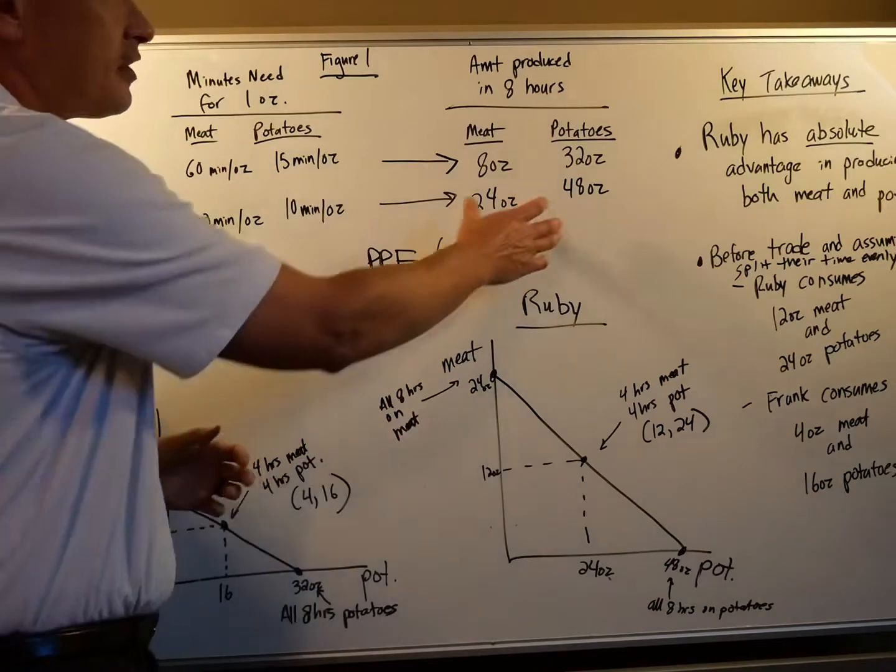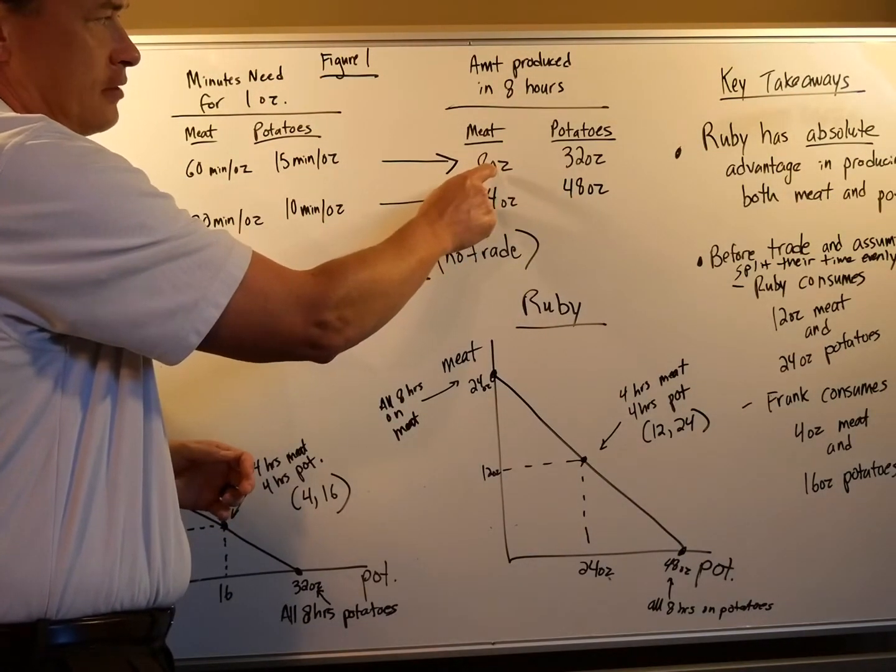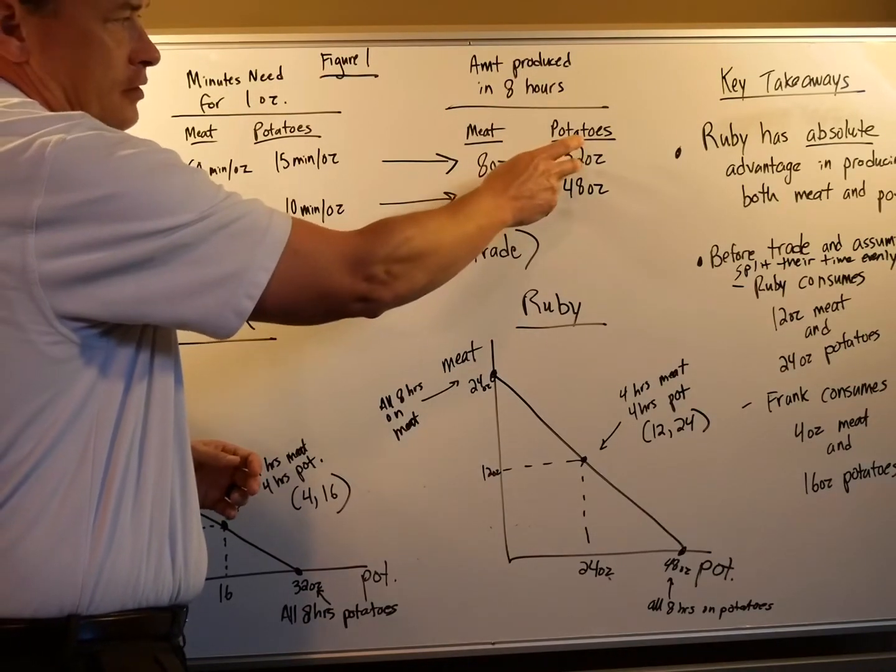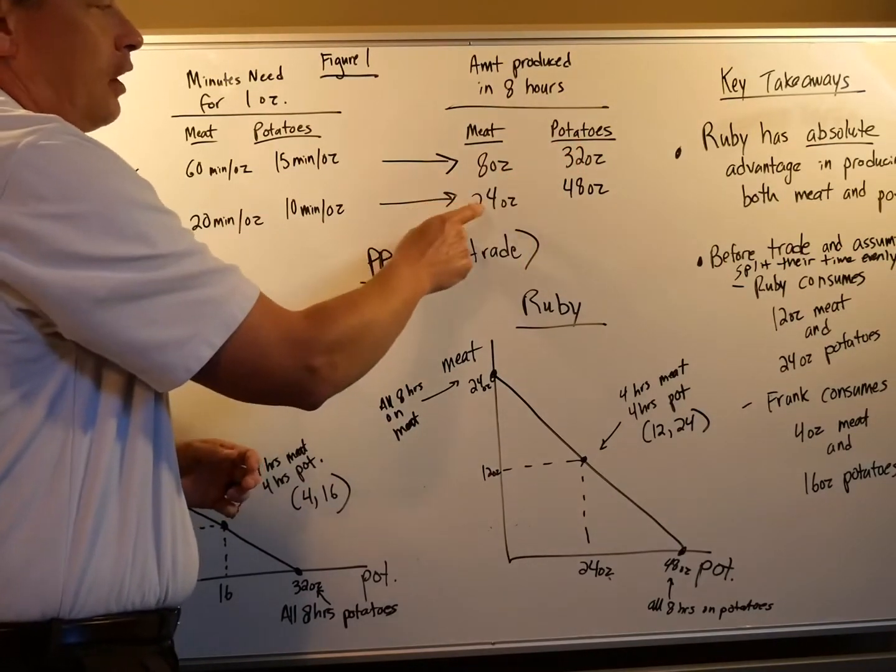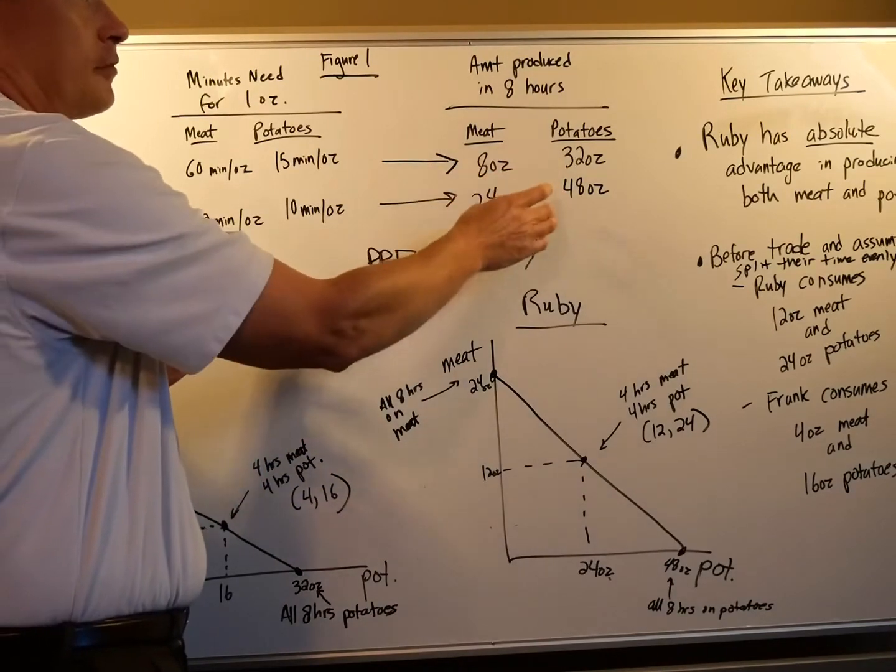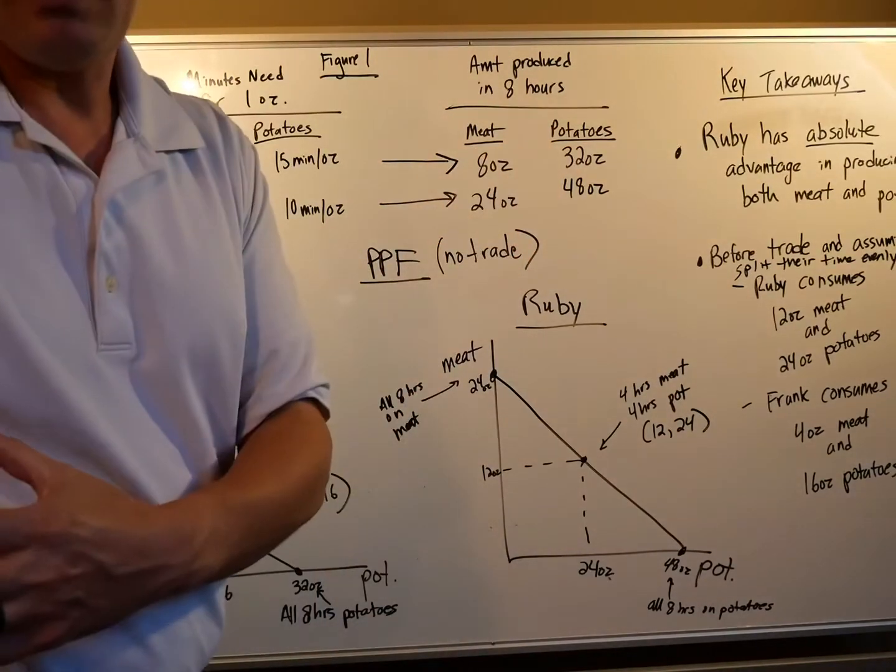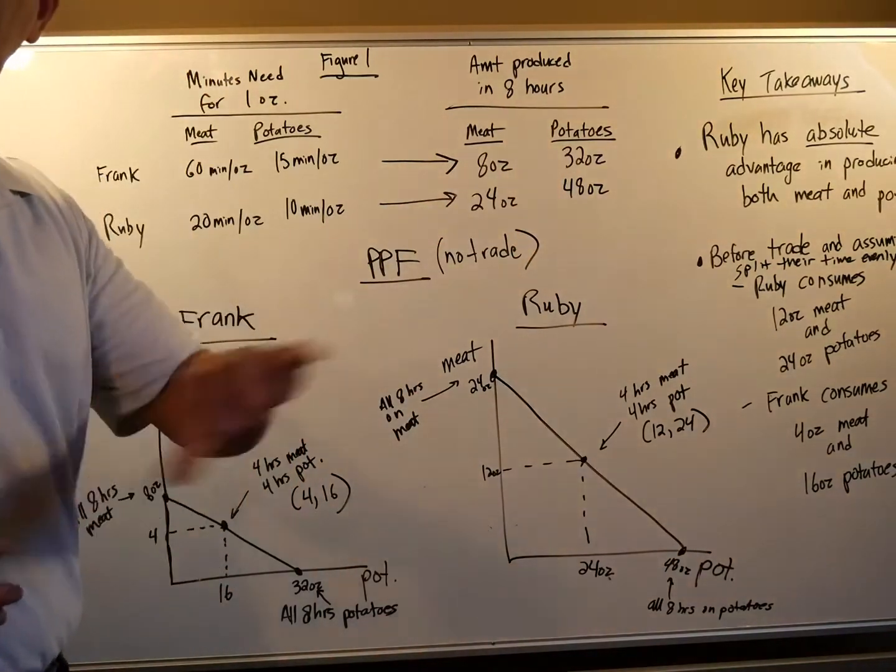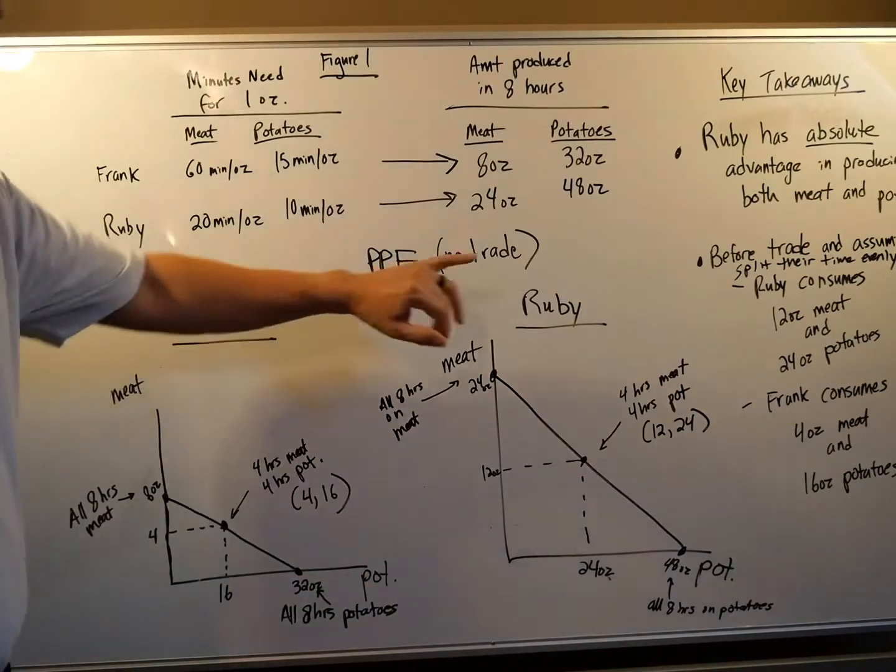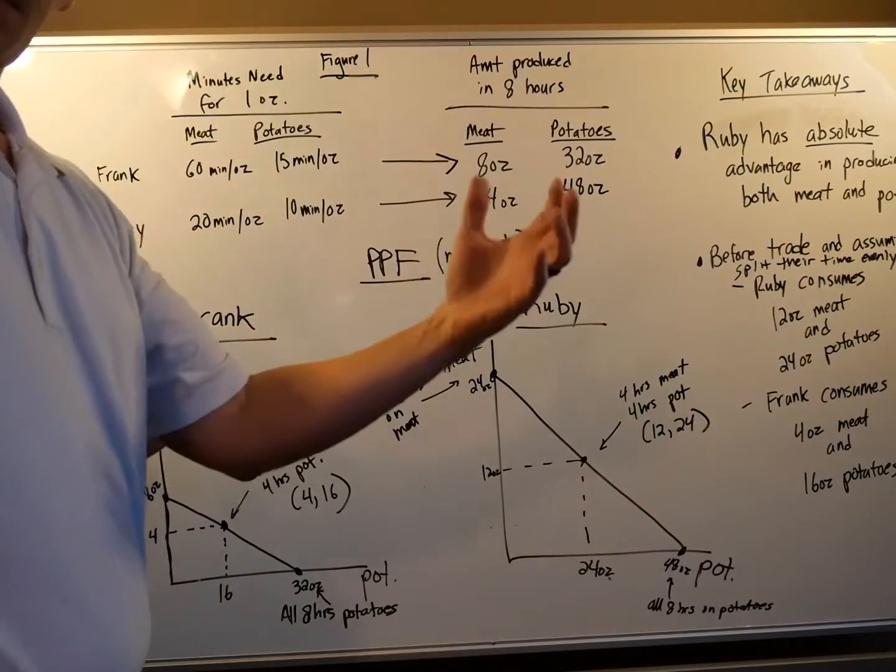However, these numbers here are maximums. But here's the thing, you want meat and potatoes. So you're not going to spend all eight hours on either one. So let's make some further assumptions there. Now, this is our production possibilities with no trade. Again, this video is on no trade. The next video will be on what happens if they decide to work together.